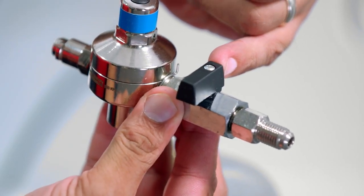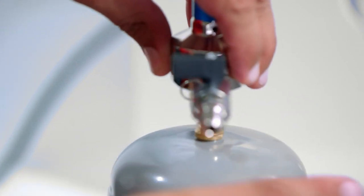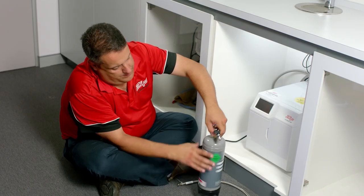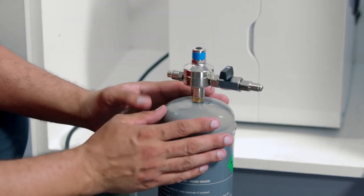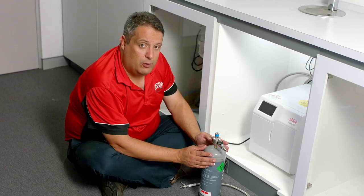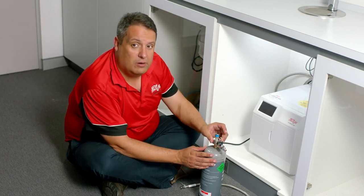Before you thread it onto the bottle, make sure the isolation valve is turned off. You will have noticed some CO2 gas escaped while I attach the regulator to the bottle. That's normal and is just the regulator connecting correctly to the bottle.